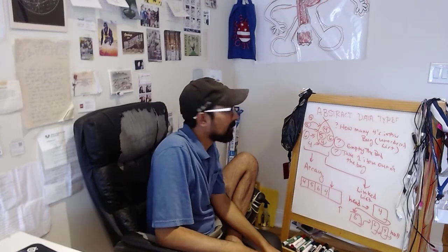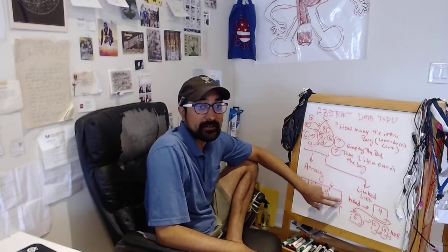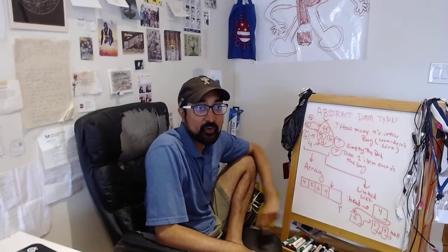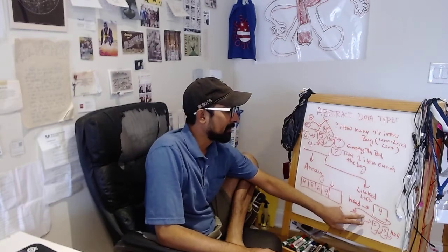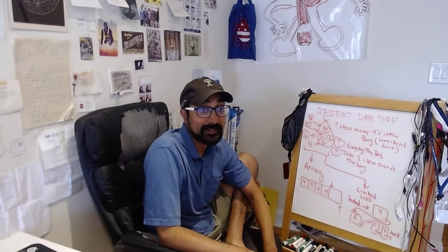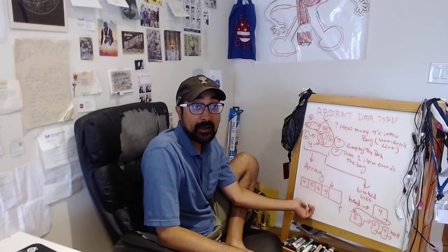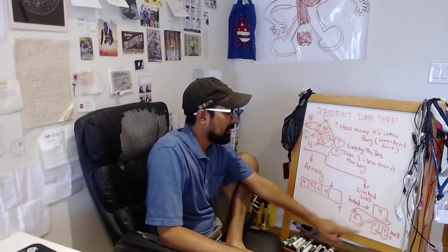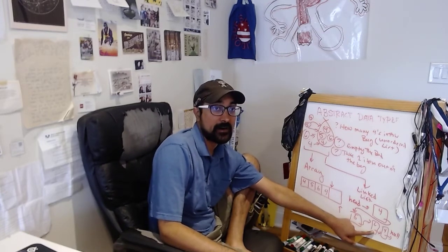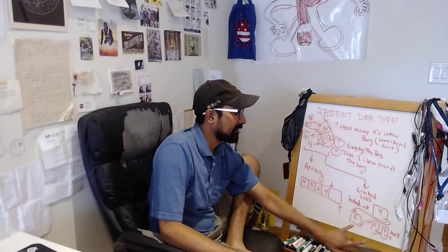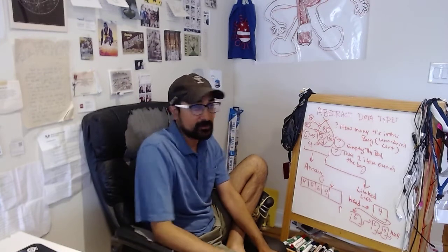Now we have all these operations — like emptying the bag — which means two different things depending on implementation. In the array version, we set the count to zero and just start overwriting old values as we insert. In the linked list version, we set head equal to null to clear it. If we want to take a random value out — say, take six out — we locate six, use a previous pointer to five, and jump that over to four. We talked about previous pointers last time.